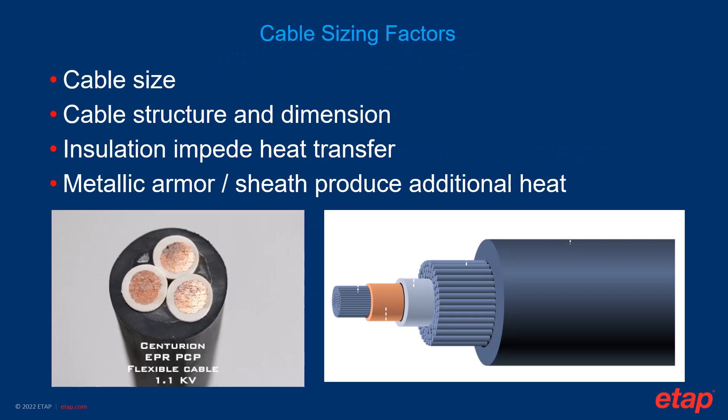For low voltage cable applications, engineers generally consider only the cable size when performing cable derating — other structures like the sheath, armor, and jacket are ignored, which is accurate enough since they don't significantly affect temperature. However, for medium and high voltage cable applications their effect deserves to be included. We divide the cable into individual layers and set up a thermal model for each: considering the thermal resistance of non-metallic layers like insulation, bedding, and jacket, and the heat generated by metallic layers like conductors, armor, and sheaths. This complexity requires computer-aided modeling, which is where ETAP helps.